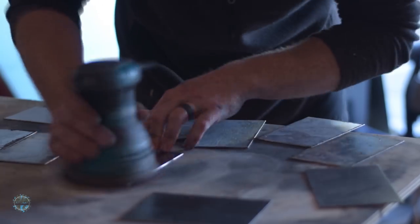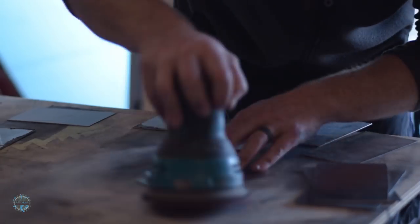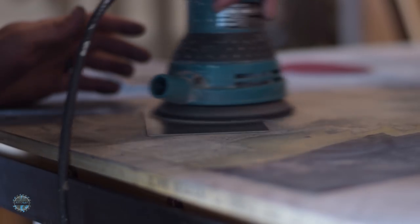Then I used my random orbital sander to clean up any tool marks on the surfaces. Started with 80, went all the way to 400 grit. And it turns out 400 grit is pretty close to the finish that you see on most kitchen stainless steel.